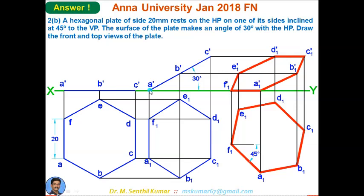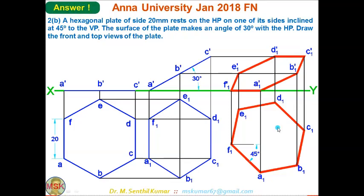Draw projectors and horizontal lines to complete the second top view. Then take this second top view and tilt it so that this edge is inclined at 45 degrees to VP, completing the third and final top view. To get the final front view, draw projectors and horizontal lines to obtain all points. Connect all points in proper sequence using a scale — that completes the final front view, with edge AF on XY (resting on the ground).